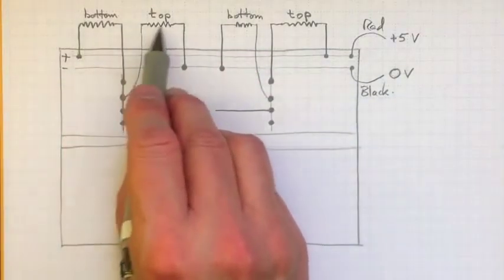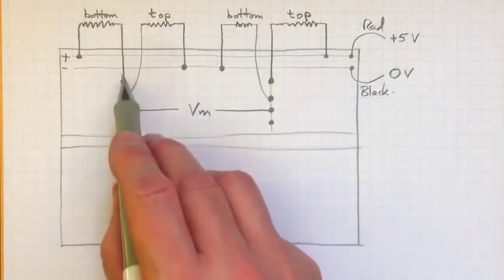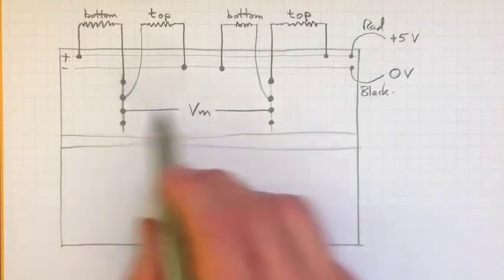So if these are both about 120 ohms, then this voltage in the middle will be about 2.5 volts. Likewise,